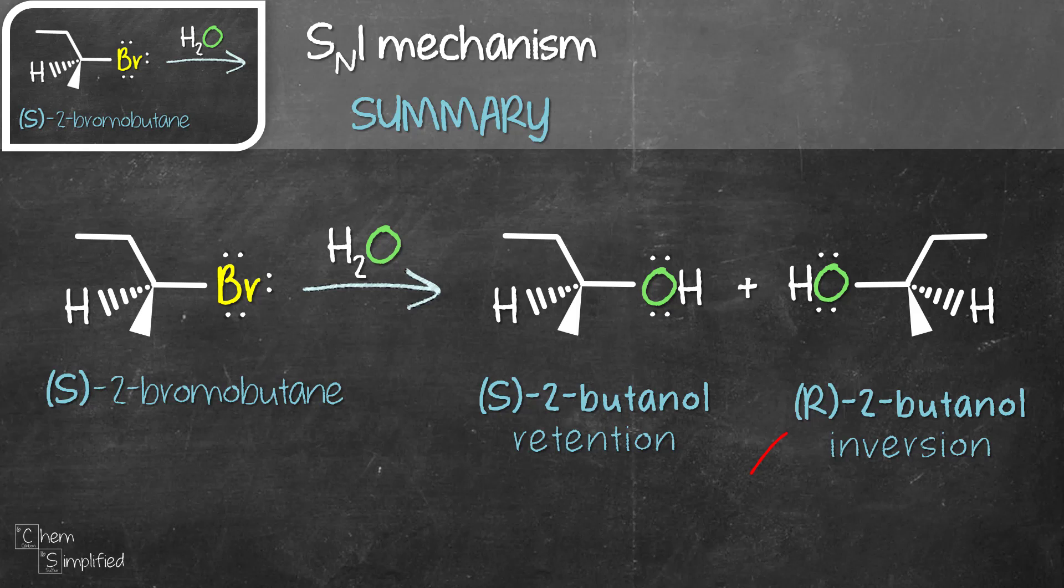As for R-2-butanol, since it's opposite of our substrate, we say there's an inversion at its chiral center. The ratio of products is 50-50 or 1 to 1 since there's equal chance for the nucleophile to attack the triangular carbocation. We call this equal mixture of enantiomers racemate.